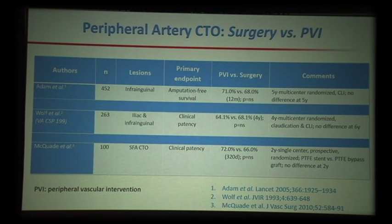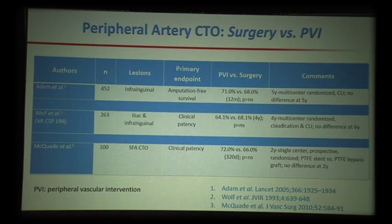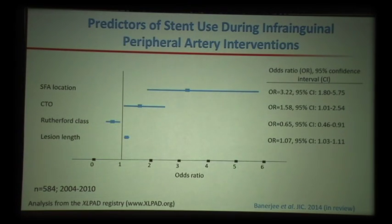Why don't these patients get referred to surgery? There are only three studies comparing endovascular and surgical revascularization of CTO — and if you find a fourth, please email it to me. The data speaks for themselves: these studies are not highly robust, they are older data, and they are statistically not significant. I think vascular surgeons have wholeheartedly adopted endovascular therapy for treating most of these lesions.